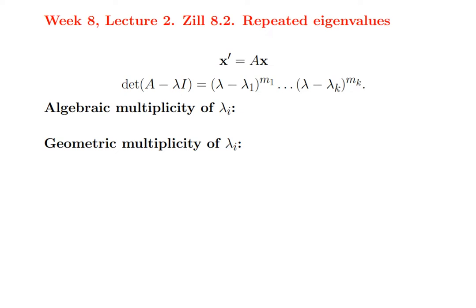How do you tell when an eigenvalue is repeated? When you find the determinant of A minus lambda I — that's called the characteristic polynomial of the matrix — and factor it, some of those factors may be repeated, and that's what we mean by a repeated eigenvalue. The algebraic multiplicity of an eigenvalue is the power m_i, that is, the number of times that factor (lambda minus lambda_i) occurs in the factored form of the characteristic polynomial — the number of times that eigenvalue is repeated.